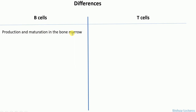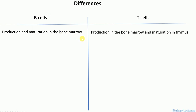Point number one: B cells are produced and matured in the bone marrow, hence the name B cells, because the maturation of these cells occurs in the bone marrow. The literature also says that since these cells were first discovered in the bursa of Fabricius, the name B cells also comes from that. T cells are produced in the bone marrow like B cells, but their maturation occurs in the thymus.